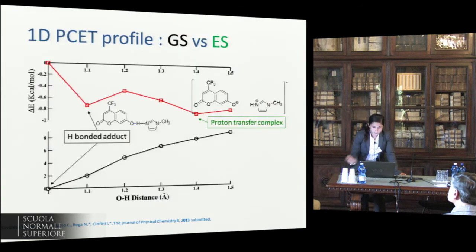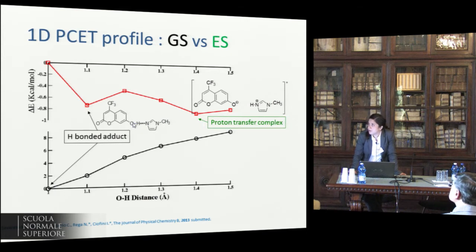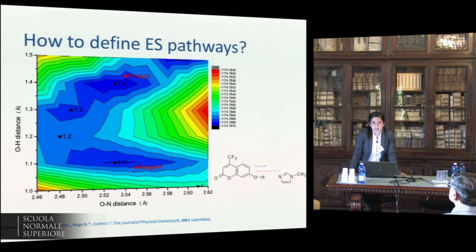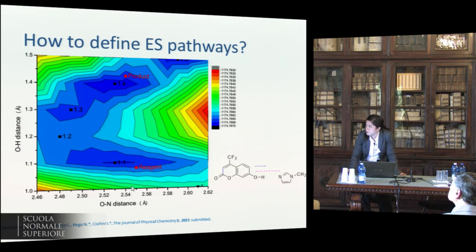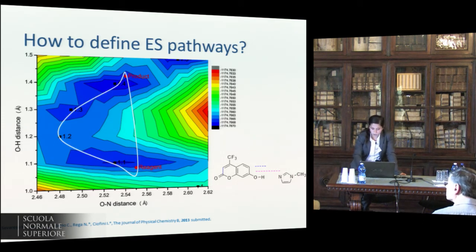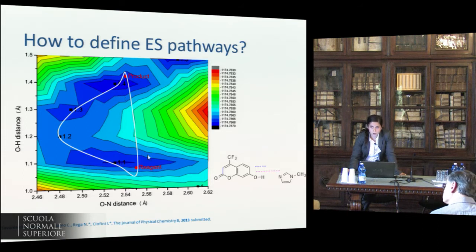Here we fixed only the oxygen-hydrogen distance. But along this path, we observed that a variation of the oxygen-nitrogen distance is also involved. So we built a potential energy surface keeping frozen both the oxygen-hydrogen distance and the oxygen-nitrogen distance, with the structure relaxed on the first excited state. What we can observe is that going from the reagent to the product, two paths are possible. One involves only the elongation of the oxygen-hydrogen distance, and the second first involves a decrease of the oxygen-nitrogen distance and then an elongation. The second path is the minimum energy path.